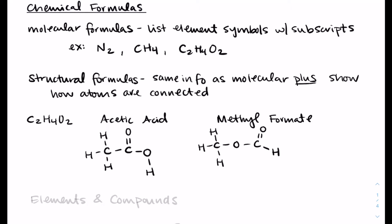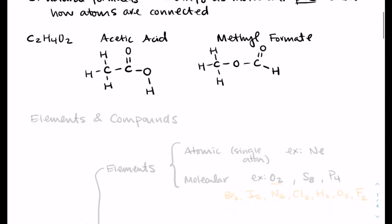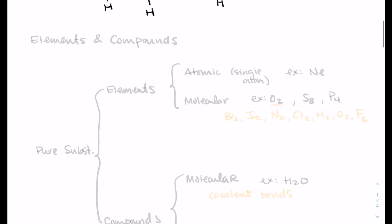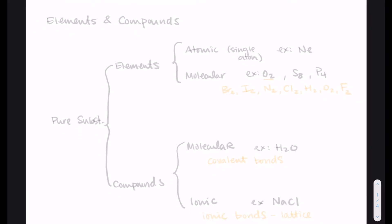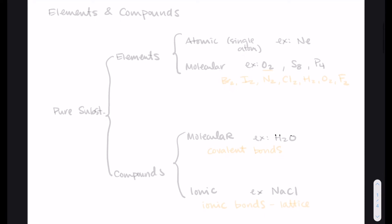In methyl formate, we do start with a carbon with three hydrogens on the left, but now that carbon is connected to an oxygen instead of another carbon. And then the carbon on the right, it still has a double bond to an oxygen, but then it is connected directly to a hydrogen.